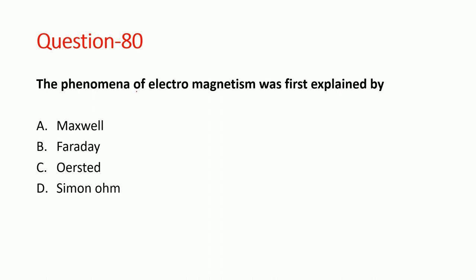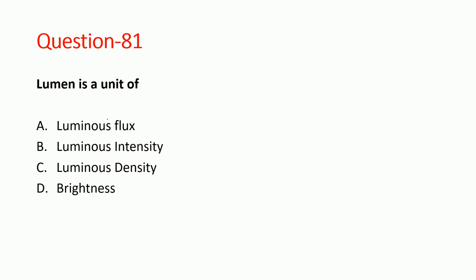Next question: the phenomenon of electromagnetism was first explained by Ørsted. Option C is correct. Maxwell, Faraday, and Simon are wrong. Next question 81: Lumen is the unit of luminous flux.